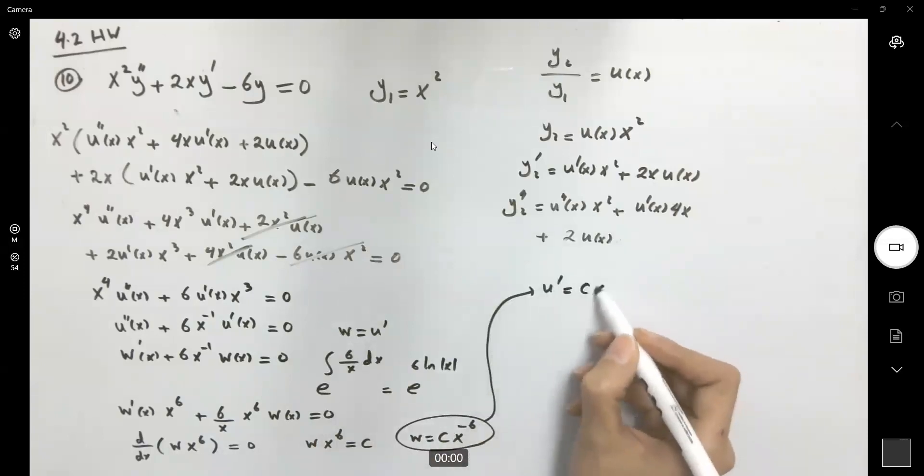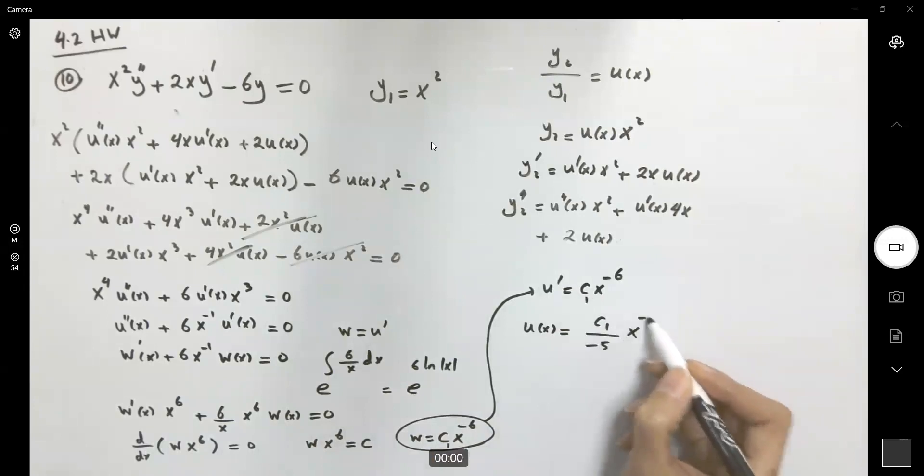So u prime is c times x to negative six. Let's call it c sub one. And u becomes, we have c1 divided by negative five times x to negative five plus c. So u of x is equal to, let's call it c2 times x to negative five plus c. Let c be equal to zero, and c2 be equal to one. So u of x becomes x to negative five.